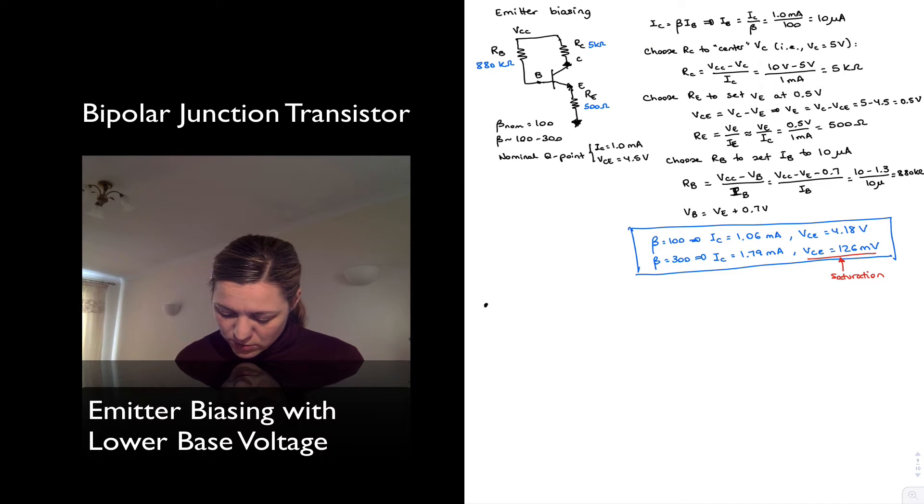I'm keeping the same emitter biasing configuration as before just for comparison purposes. I'm going to now keep emitter biasing, but I'm going to lower—I'm going to call it Vbb because it's really the supply voltage applied at the base, not the voltage at the terminal, even though that will also change.